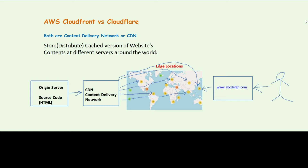The edge locations distributed across its network around the world serve user requests. When a user tries to access the website, the edge location nearest to the user is used to serve the request. This helps to reduce latency while accessing the website and gives the user a much better experience. This is how a basic content delivery network works.